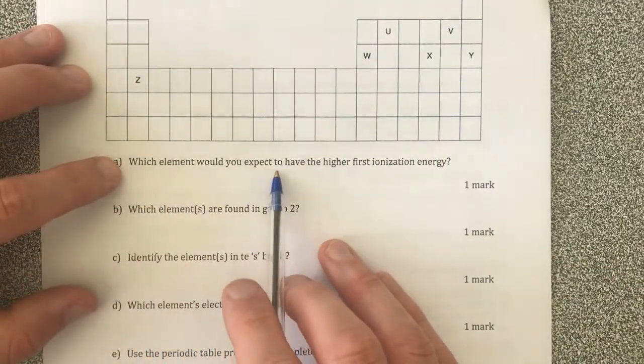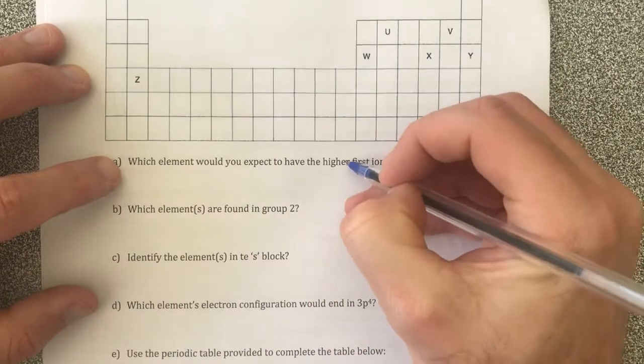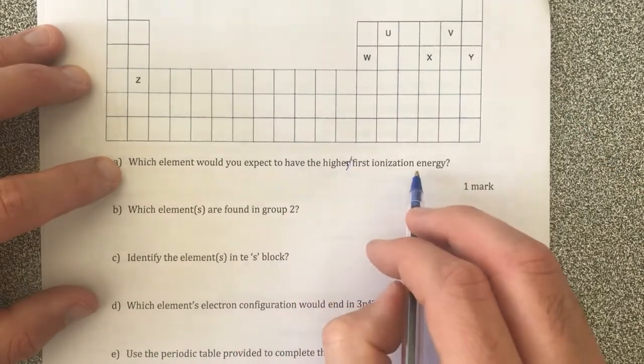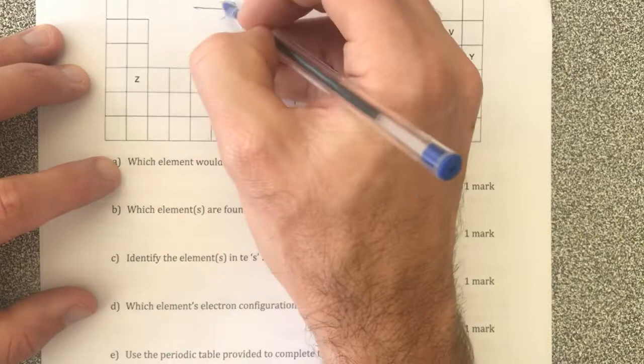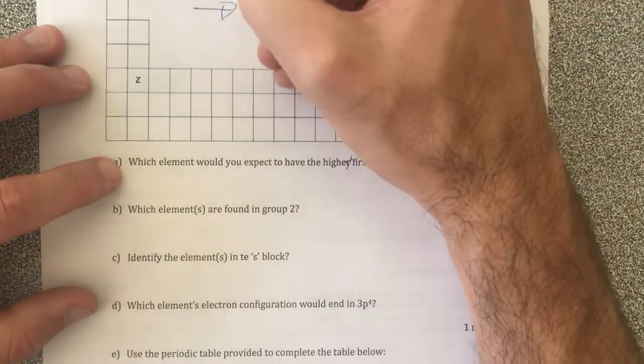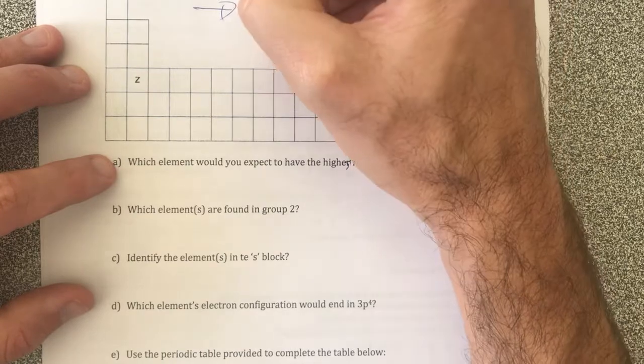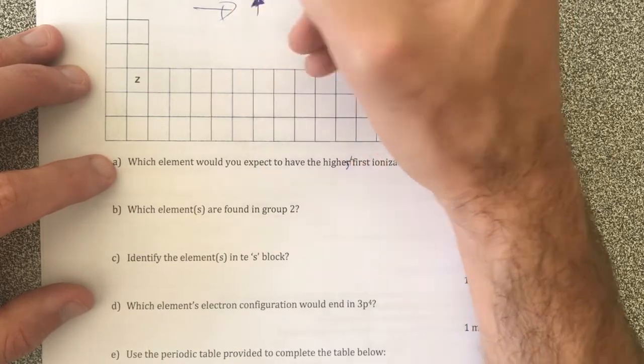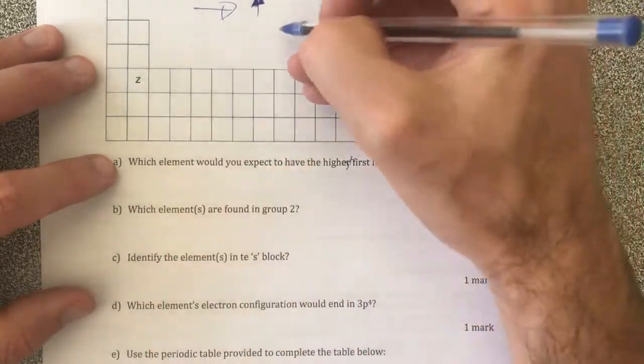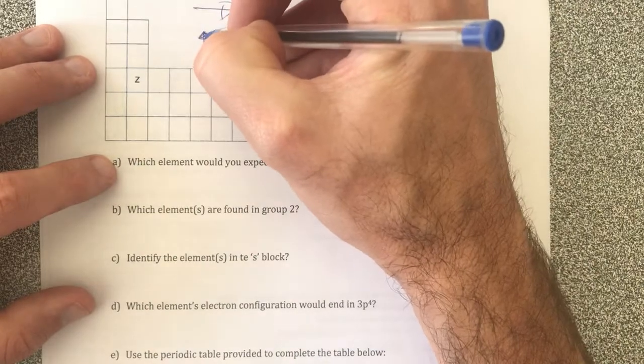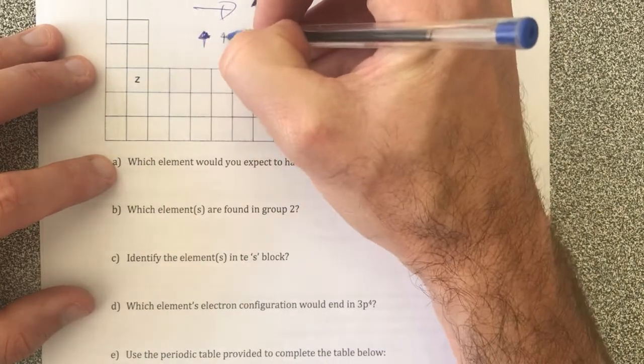Which element would I expect to have the highest first ionization energy? As you move across, ionization energy increases. So as I move from left to right, it gets harder and harder to remove an electron. Also, as I move up a group, ionization also increases.